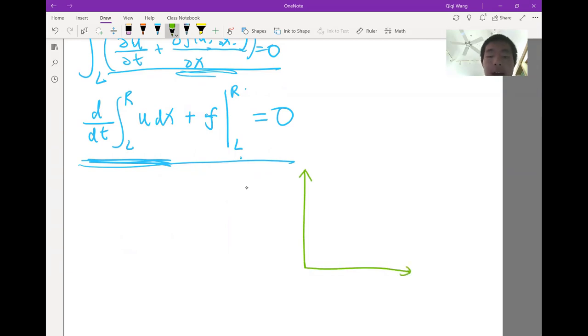Let's look at a solution, a potential solution u as a function of x at one particular time, and imagine we have a discontinuity. On the left of the discontinuity, the solution is ul, a constant. On the right of the discontinuity, the solution is ur, another constant.